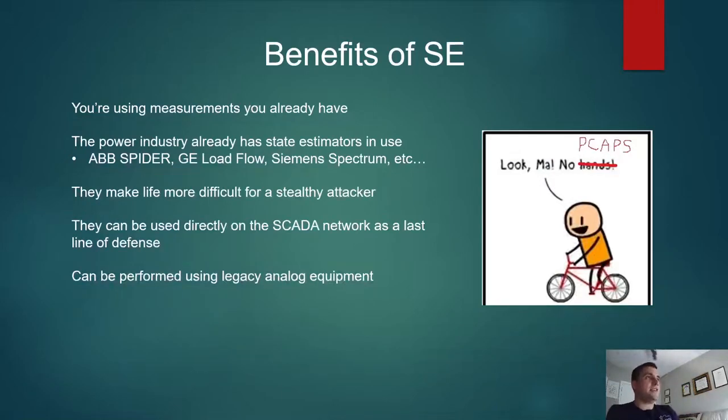Benefits of state estimation are, one, you're using measurements that you already have. That's probably the biggest one. So as far as defense in depth goes, this doesn't require doing any tricks to add normal commercial off-the-shelf IT security technology onto an OT system, which is a big plus. And if you work in the power system industry, you already have these. ABB Spider, GE Load Flow, Siemens Spectrum, there's lots of commercially available state estimators out there for the power industry that were not designed for security, but could be potentially utilized for security. It makes life much more difficult for an attacker to be stealthy. If an attacker's attacking your sensors, especially if you have lots of accurate redundant measurements, they need to be much more careful about how they manipulate those measurements to avoid detection.